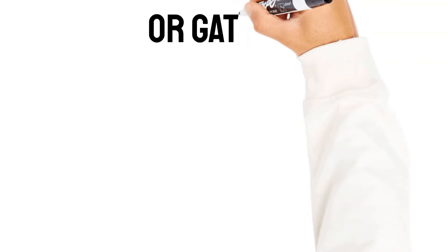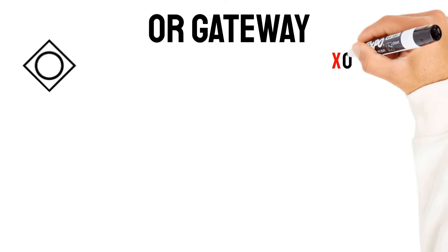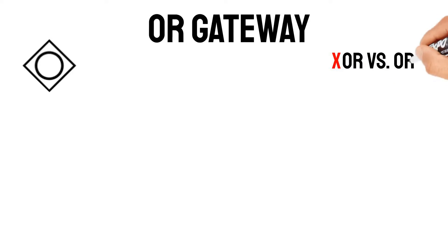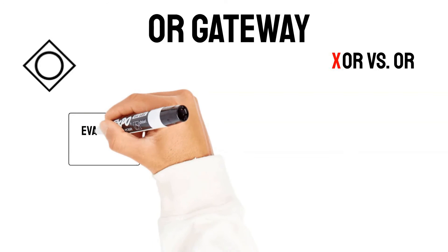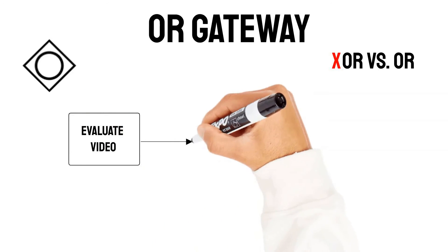Now it's time for the OR gateway. Like I mentioned in the beginning, there is an important difference between either-or and OR. Usually in our daily conversations, when we say OR we mean either-or, so we reference the either-or BPMN gateway in usual language. The OR gateway is also called the inclusive OR. Let me explain again with an example. In the end of this video, you are probably going to evaluate this video.